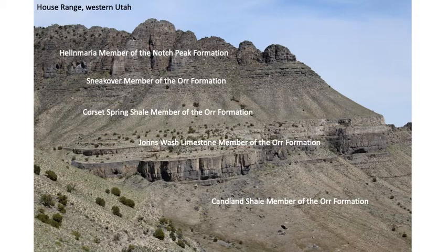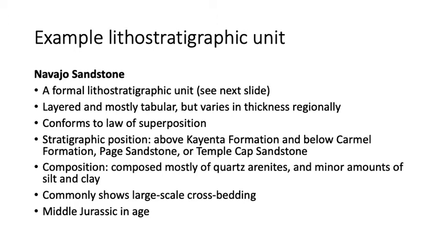The Navajo Sandstone is a formal lithostratigraphic unit. It's layered, mostly tabular, and varies in thickness regionally — getting several hundred to over a thousand feet thick in some places. It conforms to the law of superposition, overlying the Chinle Formation and lying below the Carmel Formation, and also below the Page Sandstone and Temple Cap Sandstone in various places.